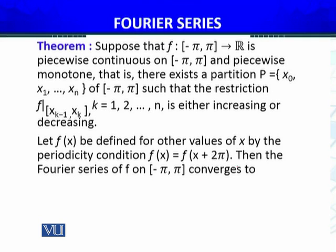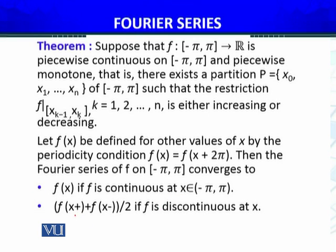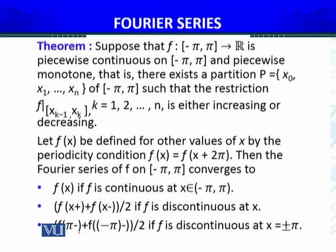The conclusion is: if these sub-conditions are satisfied, then the Fourier series of F on [−π, π] converges to F(x) if F is continuous at the interior point; to [F(x⁻) + F(x⁺)] / 2, the mean value, if F is discontinuous at X; and to the mean value of the one-sided limits at the end points if F is discontinuous there. This result has been summarized for the most generic case where F is piecewise continuous and piecewise monotone.